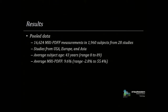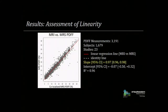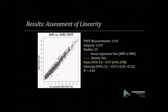The average MRI-PDFF was 9.6%, with a wide range from negative 2.8% to 55.4%. The linearity assessment of MRI-PDFF against co-localized MR spectroscopy shows a near-perfect linear fit: a slope of 0.97, a negligible intercept of negative 0.07, and an R-squared of 0.96, from over 3,000 measurements in over 1,600 subjects from 23 studies.